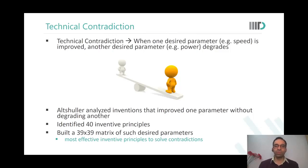So what is happening is there is a kind of a seesaw. I want to improve the speed so power would degrade. If I want to reduce the power, the speed would degrade and so on. That is what we usually see. This is called a technical contradiction.